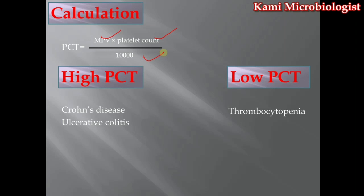There are some diseases and conditions that cause PCT to become high. The first is Crohn's disease, in which the digestive tract — including the esophagus and stomach area — becomes inflamed, causing abdominal pain, fatigue, and diarrhea. Due to this inflammation, the platelet amount increases, which causes PCT to also increase.